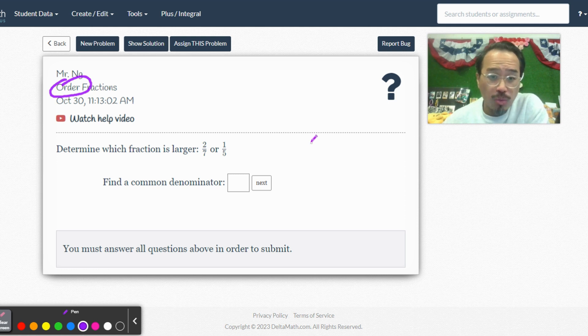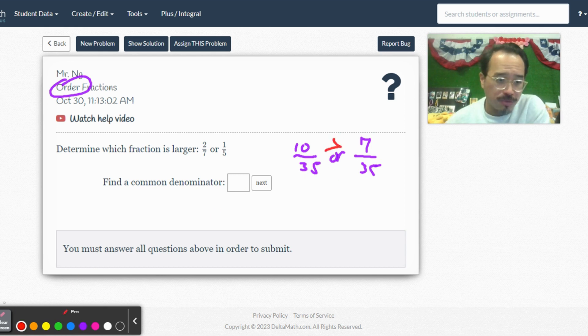Now, here we have two 7ths and 1 fifths, right? So, the first step begins to find a common denominator, which is 35. So, two 7ths, right? 7 times 5 is 35, so 2 times 5 is 10. 5 times 7 is 35. 1 times 7 is 7. So, again, it's already immediately obvious to us which one's greater. It's the first fraction.